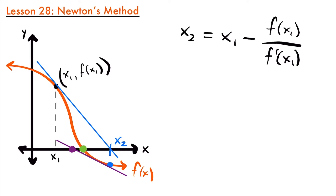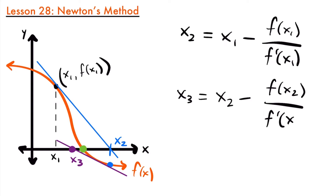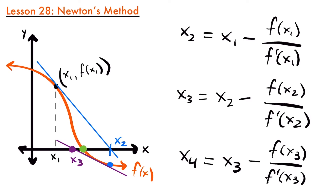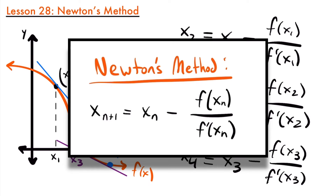We are closer with x3 than we were with x2. So x3 equals x2 minus f of x2 divided by f prime of x2. Then x4 equals x3 minus f of x3 divided by f prime of x3. As we keep getting these new values of x, they're going to be closer and closer to the actual x-intercept. This is where Newton's method comes from.